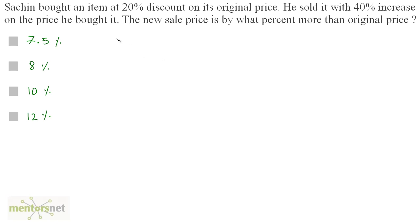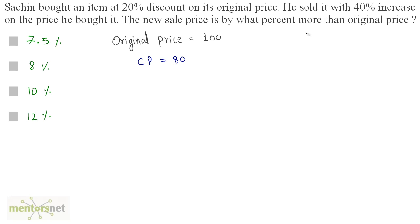Let the original price of the item be Rs. 100. Sachin bought it at 20% discount on the original price, so the cost price equals 100 minus 20, which is Rs. 80. He sold it with a 40% increase on the cost price, so the selling price equals 140% of the cost price — that is, 140% of 80.